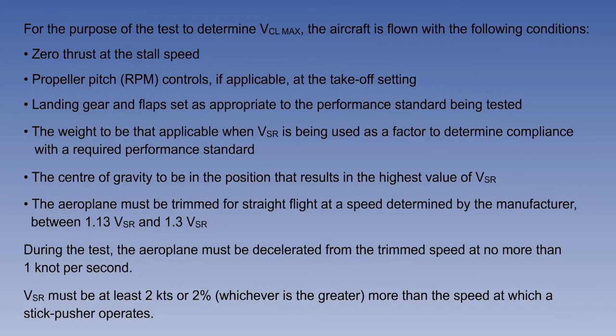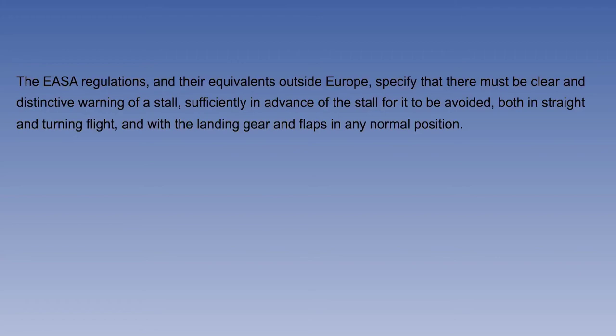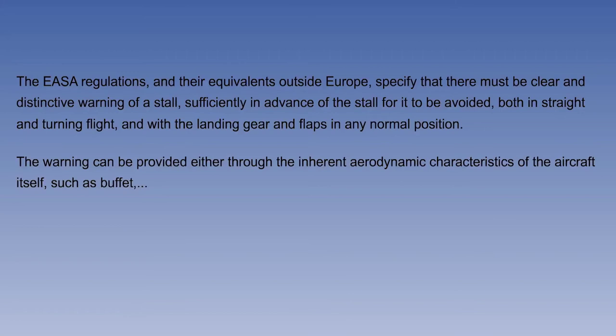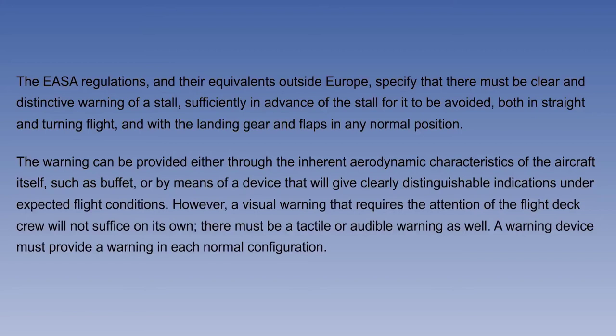The EASA regulations, and their equivalents outside Europe, specify that there must be clear and distinctive warning of a stall, sufficiently in advance of the stall for it to be avoided, both in straight and turning flight, and with the landing gear and flaps in any normal position. The warning can be provided either through the inherent aerodynamic characteristics of the aircraft itself, such as buffet, or by means of a device that will give clearly distinguishable indications under expected flight conditions. However, a visual warning that requires the attention of the flight deck crew will not suffice on its own; there must be a tactile or audible warning as well.